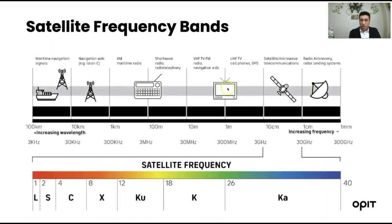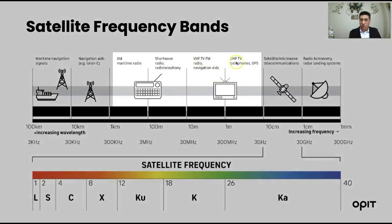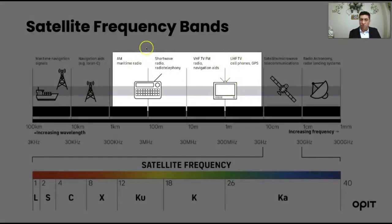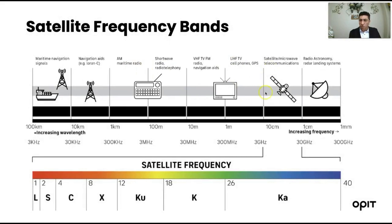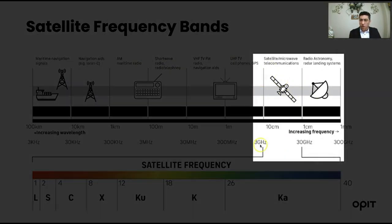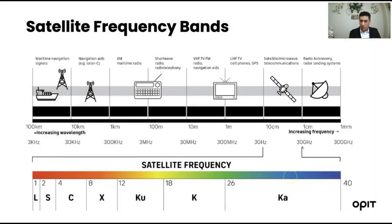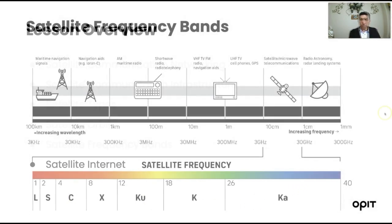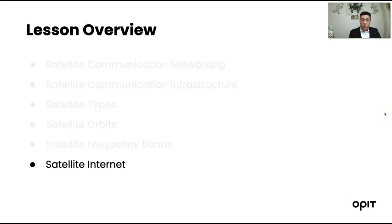When it comes to satellite communications, we use different frequencies. VHF and UHF are used for TV; AM and FM are used for radio. For satellites, we use frequencies from 3 GHz to 30 GHz, and they have started going beyond that recently. The most important bands to remember are the C band, the Ku band, and the Ka band — you will always hear about these when dealing with satellite technology.